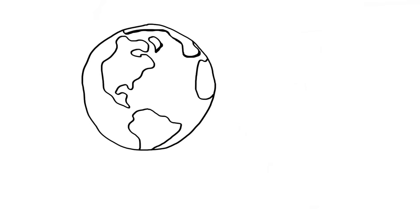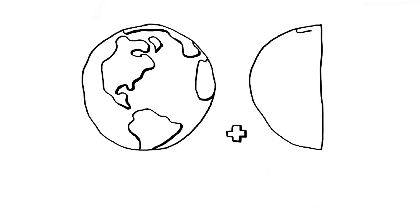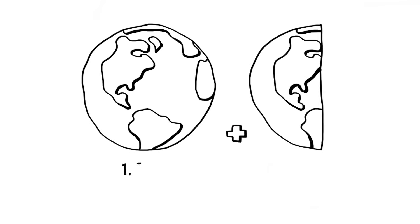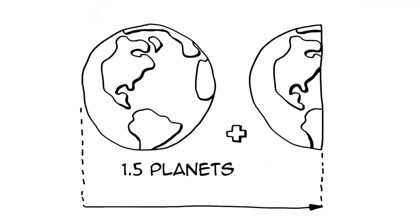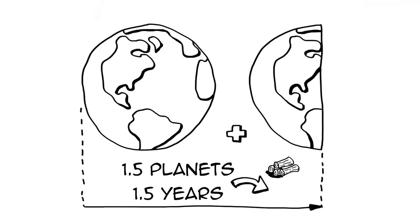This is what we need to provide the resources we use and to absorb the waste we produce: 1.5 planets. So that means it takes about a year and a half for our planet to regenerate what we use in a year.